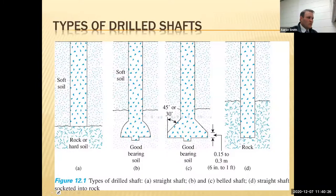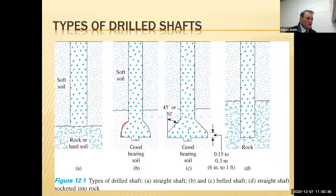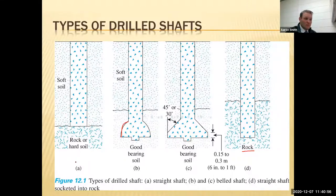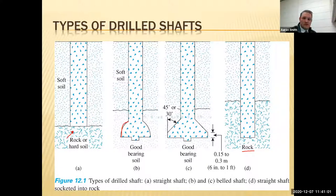So what kinds of drilled shafts are there? There are straight shafts, belled ends — which can be conical, parabolic-shaped, or a big cone shape at the end — and you can also socket them into rock. There are a few different options, but most of the drilled shafts seen lately are straight shafts; they're the most common.